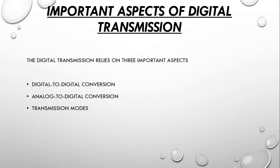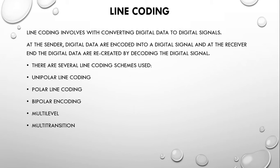Line coding involves converting digital data into digital signals. At the sender, digital data is encoded into a digital signal; at the receiver, the digital data is recreated by decoding the signal. Several line coding schemes exist: unipolar, polar, bipolar, and multi-level multi-transition line coding.